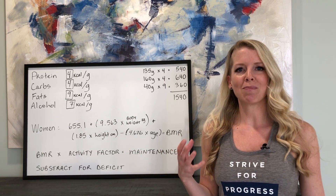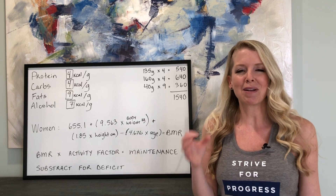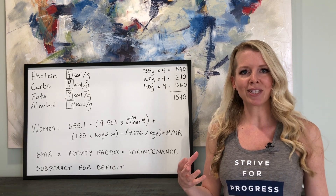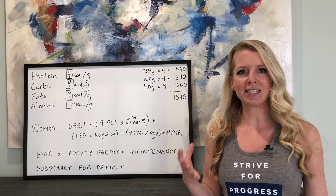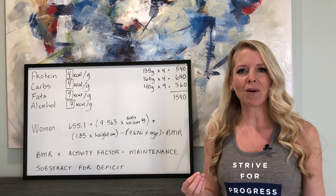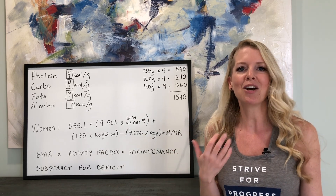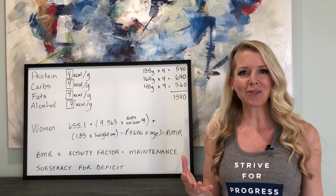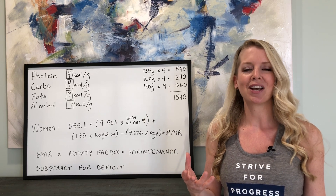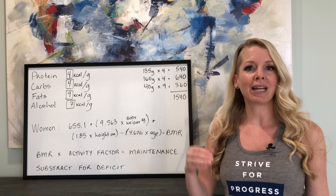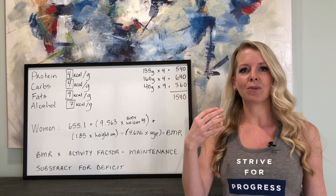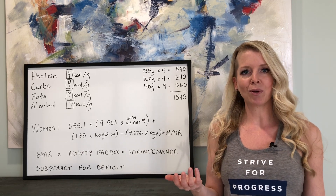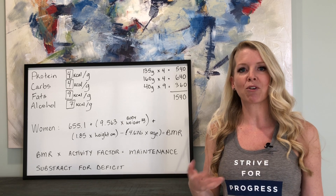Before I ever understood macros, I had this idea that I needed to know what my perfect macros were, and yet I would go online, go on different sites, use different calculators, and it would always give me different numbers. Now I understand it's because there are so many different equations you can use to calculate your macros. Today I'm using the Harris-Benedict equation, and you'll be able to use it to continue to manipulate your numbers instead of relying on a site where you don't know which equation they're using.